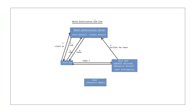This is the OAuth2 authorization code flow. Initially, the client application requests a code with the authorization server. It sends its client ID to get the code, and the authorization server responds with a code to the client application. The client application then requests an access token by sending the code along with its client credentials. The authorization server verifies this information and sends back an access token. The client application then uses this token with the resource server to get user information and uses it to authenticate and authorize the user.